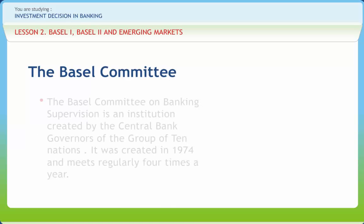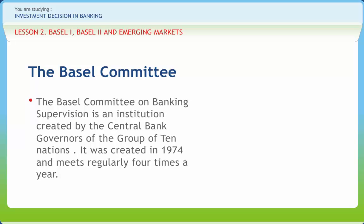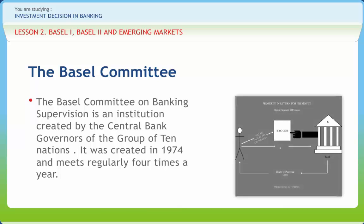The Basel Committee on Banking Supervision is an institution created by the central bank governors of the Group of Ten Nations. It was created in 1974 and meets regularly four times a year. It provides a forum for regular cooperation on banking supervisory matters. Its objective is to enhance understanding of key supervisory issues and improve the quality of banking supervision worldwide by exchanging information on national supervisory issues, approaches and techniques. Basel I and Basel II are both products of the Basel Committee.